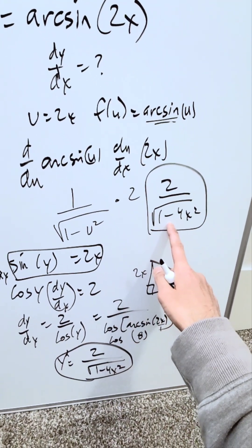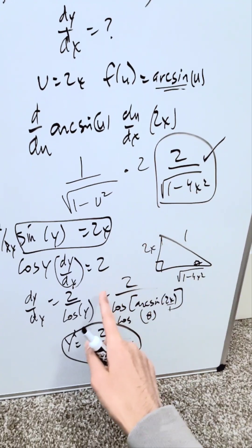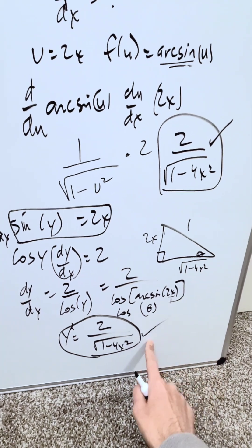And here through the direct way 2 over root of 1 minus 4x squared. This right here is a preferred approach. This requires a little more work, but you still arrive at the correct answer.